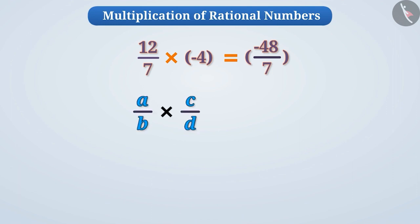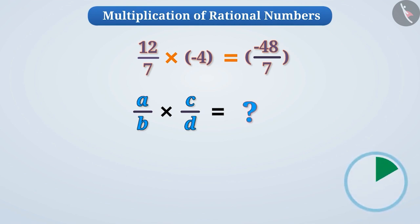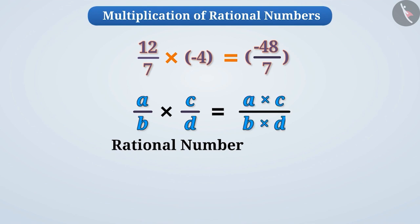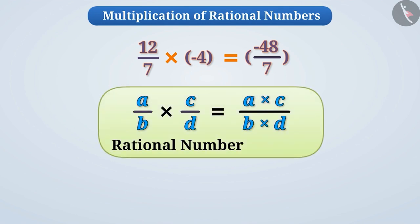Now, imagine how we would do this if we had to multiply two rational numbers. Think for a while. Let me tell you, we do this just like multiplying fractions. That is, if we want to multiply two rational numbers, we multiply the numerators and then the denominators, and then express the result as the product of the numerators divided by the product of the denominators.